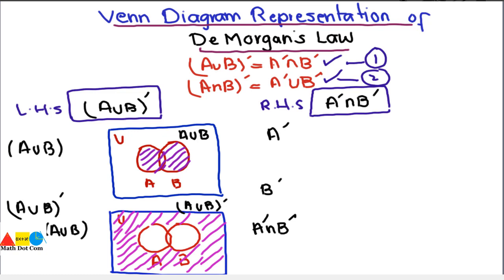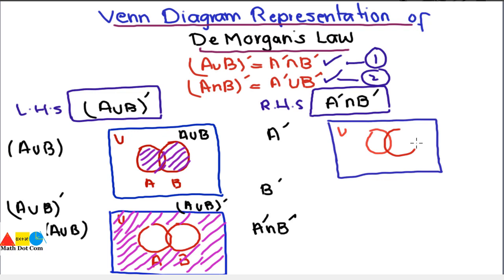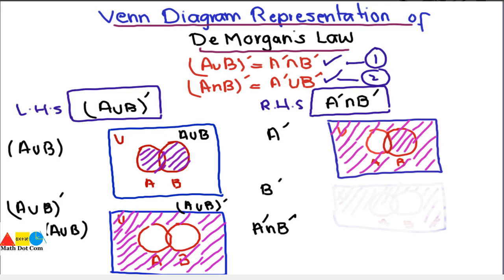Keep in mind this should equal A union B whole complement. For A complement, which equals U minus A, we draw the universal set with sets A and B. We subtract the portion of A from the whole set. Note that in A complement, the intersection portion of A and B is also not included, since we subtract all elements of A. This is the Venn diagram of A complement.